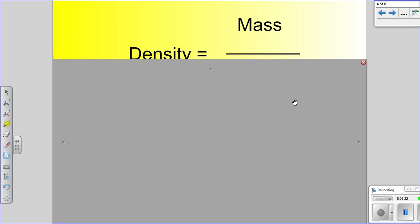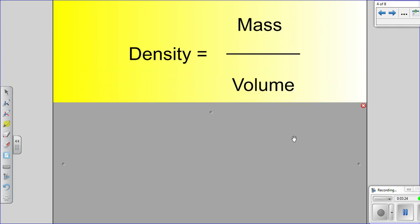Density has a formula, a mathematical formula, that we can calculate. So this is it right here. Density equals mass divided by volume. This line here represents divided by. It's not addition, subtraction, it's divided. So mass divided by volume is density.